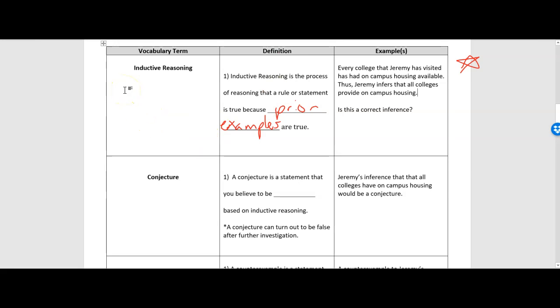A conjecture is exactly what Jeremy made. A conjecture is a statement that you believe to be true based on inductive reasoning. So a conjecture is like your conclusion. After you've looked at all the data, after you've seen the examples of stuff that's happened before, then you come up with a conclusion for what you think is to be true. Jeremy's inference was that all colleges must have on-campus housing. It's important to note that just because it's happened before, it doesn't mean it's always going to be the case. So a conjecture can turn out to be false after further investigation. And sometimes it happens in math. We see a bunch of examples that all work out the same way, and we make an assumption that we think is true.